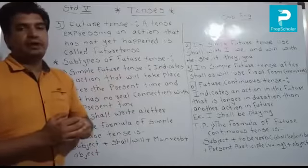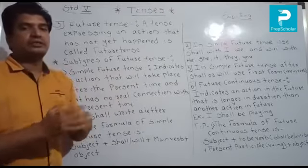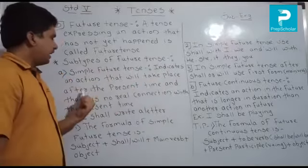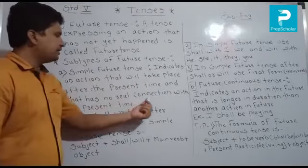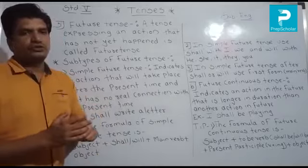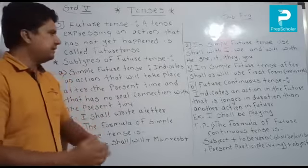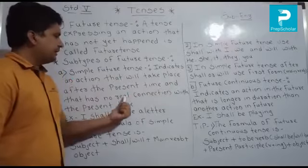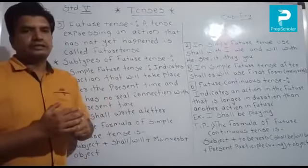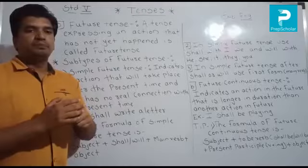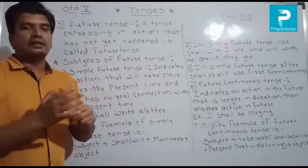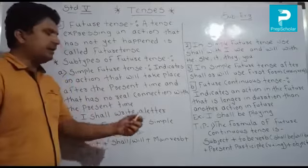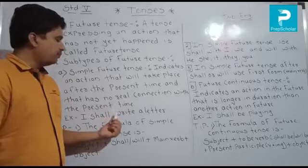The first subtype is simple future tense. What is the definition of simple future tense? It indicates an action that will take place after the present time and that has no real connection with the present time. It's called simple future tense. Example: I shall write a letter. It is an example of simple future tense.